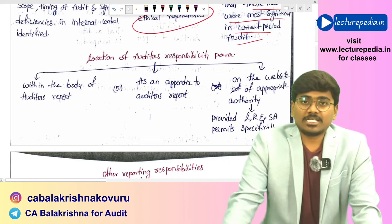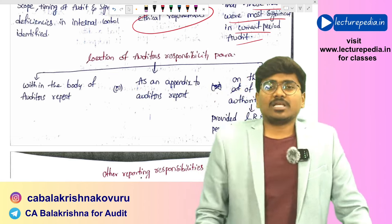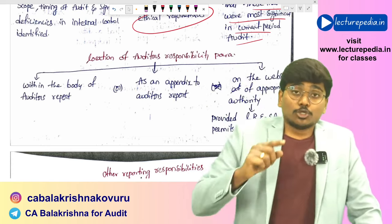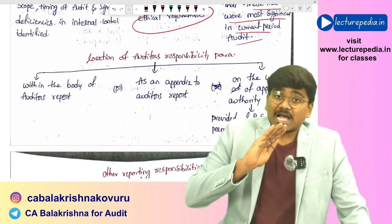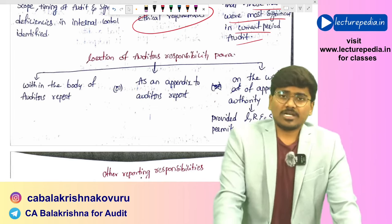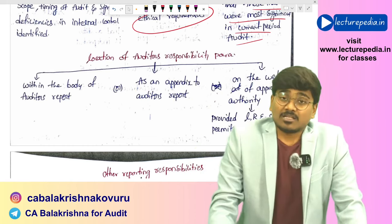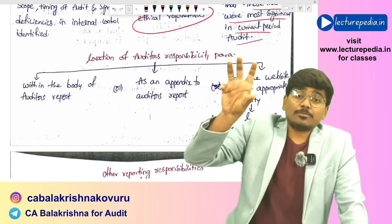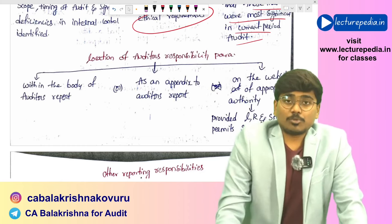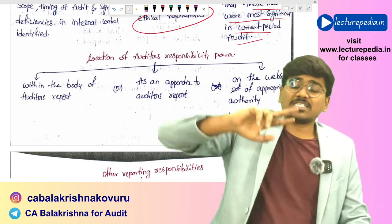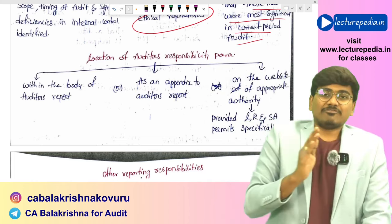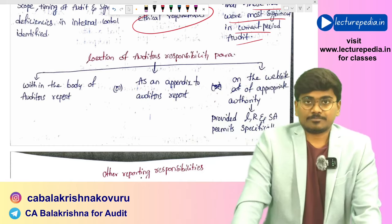The second way is to give the auditor's responsibility paragraph as an annexure to the audit report. The third way: if the appointment of the auditor is made by some external authority, and that authority's website lists the auditor's responsibility, then the auditor in his audit report can simply make a reference to that website. These are the three ways the auditor's responsibility paragraph can be presented.